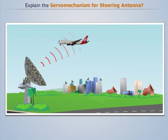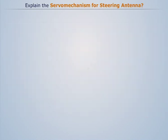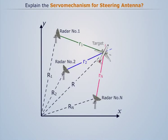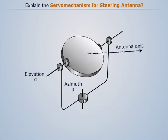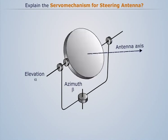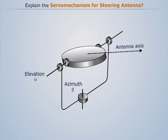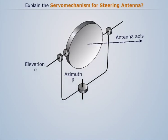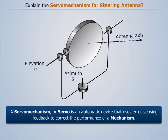The servo mechanism for steering the antenna is a response to commands from radar sensors. The antenna has two angular motions: one rotation is about the vertical axis, and another is about the horizontal axis, in which the elevation angle is varied. Thus, a servo mechanism or servo is an automatic device that uses error-sensing feedback to correct the performance of a mechanism.